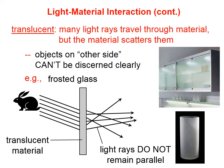If you have a material that is translucent, instead of a regular window, we have a window that is made out of a translucent type of glass. The light rays that are reflected off of the rabbit do pass through the material, but they don't remain parallel.